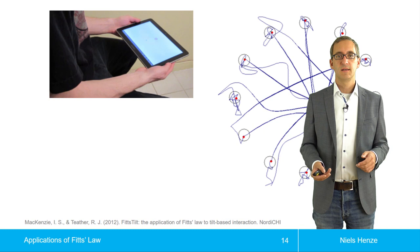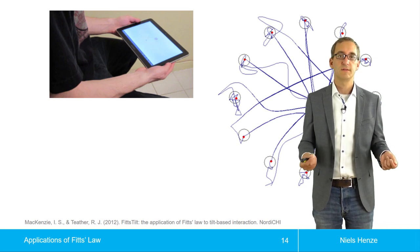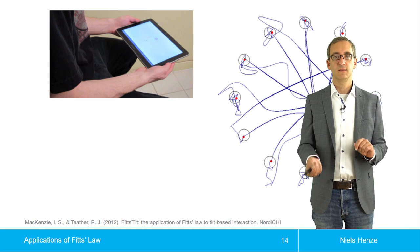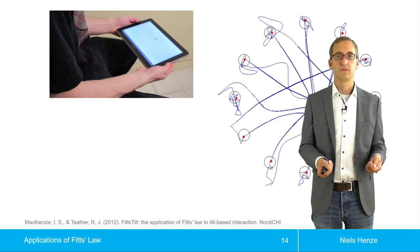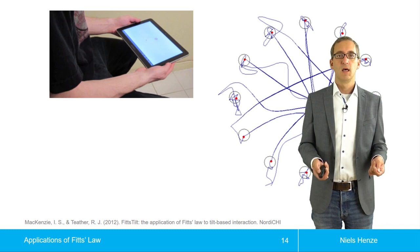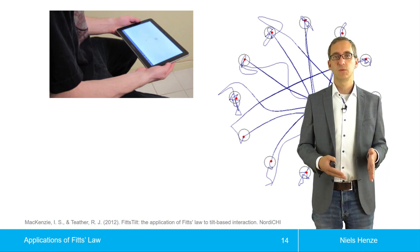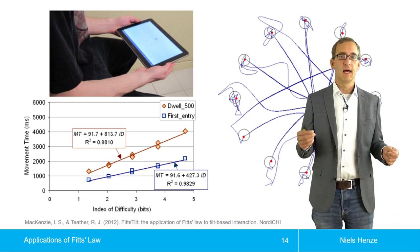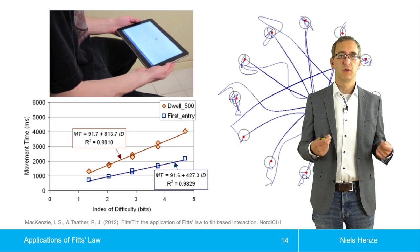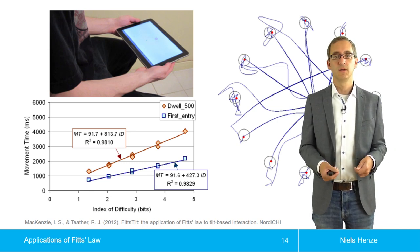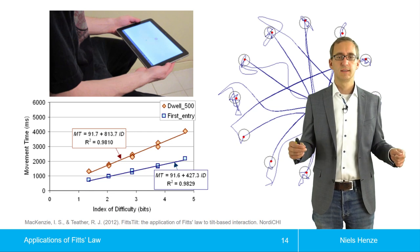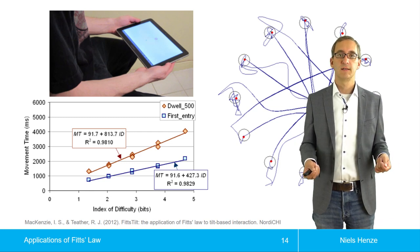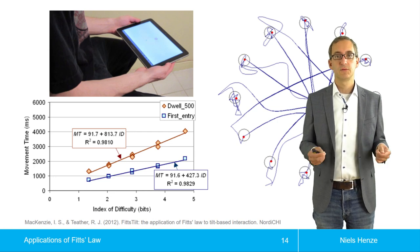But McKenzie and Tether still wanted to figure out how useful this input device is. They had two variations: one where you select a target by just crossing it, and another where you have to stay on the target for a while — called dwell time. These two variations were used to conduct the Fitts' law experiment. The results are shown in a graph with two lines: the blue line — the crossing method — resulted in a lower task completion time and accordingly a higher throughput.